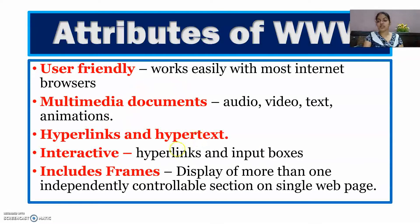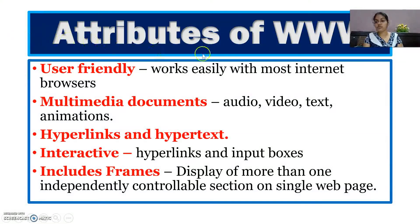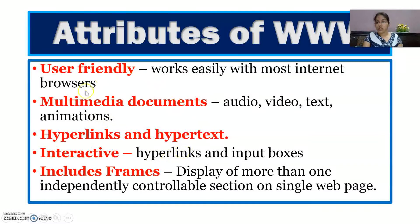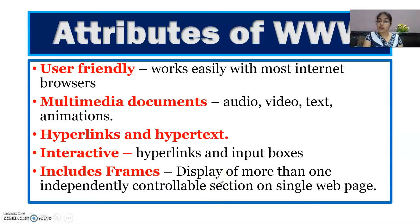The next attribute is interactive. WWW is interactive with the help of hyperlinks and input boxes. Another attribute is frames — suppose you have one website divided into many different parts; those parts are called frames. For example, one frame could have headings and another the descriptions. In a single web page, you can independently control and scroll one frame without affecting the other. This is called display of more than one independently controllable section on a single web page.